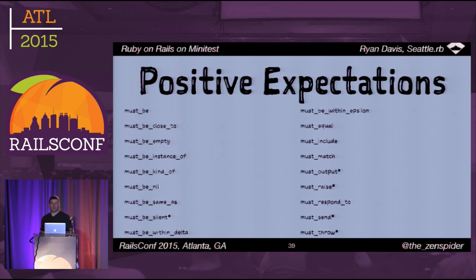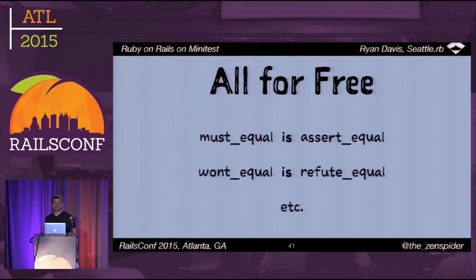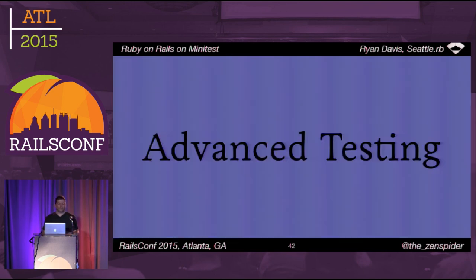All your normal design code tools exist and work as normal — include works, def works, everything is as you'd expect. You're just using a slightly different language. Similarly, Minitest::Spec has many expectations defined, a similar set of negative expectations, and a similar set of missing ones, all gained for free because each expectation maps to an assertion directly.